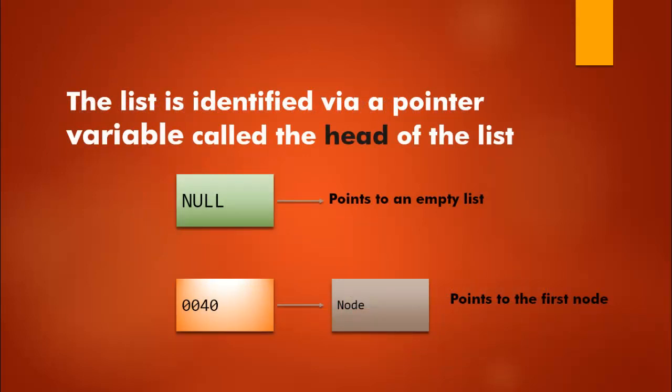We will also have a variable within the list, usually called head or root. The head contains a pointer to the very first node. If I look at head and its value is null, that tells me there are no nodes in the list. But if head contains a value like 0040, I know that's the address of the very first node, and I can follow the chain from there.